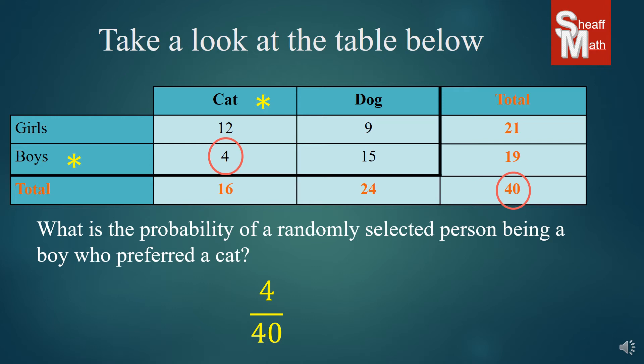But we do want to simplify if we can. So you want to simplify this fraction to its lowest terms, which is 1 out of 10. You have a one-tenth chance of asking a boy who preferred a cat.